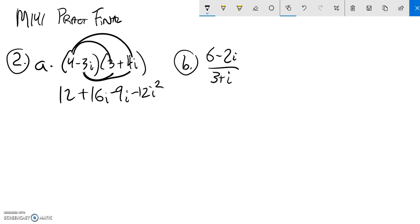i squared is negative 1, so this is a positive 12. So I have 12 plus 12, and then plus 16i minus 9i. 12 plus 12 is 24, and 16i minus 9i is 7i.